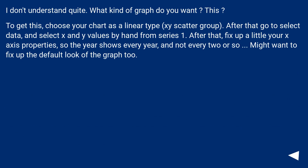I don't quite understand. What kind of graph do you want? To get this, choose your chart as a linear type, XY scatter group. After that, go to Select Data and select x and y values by hand from Series 1.